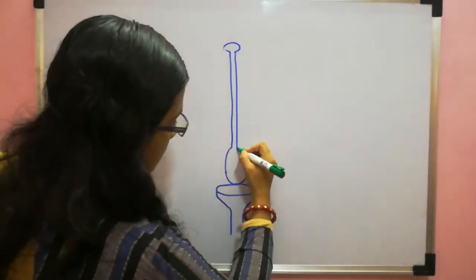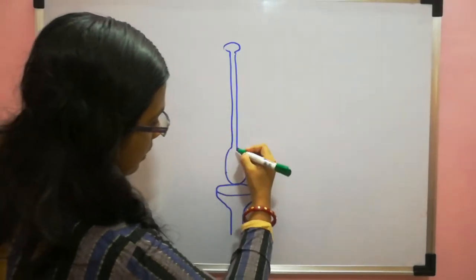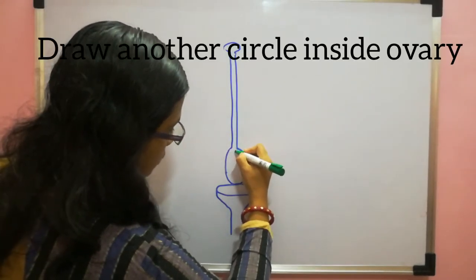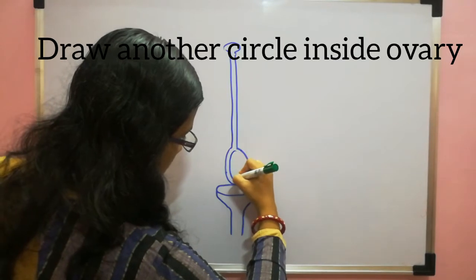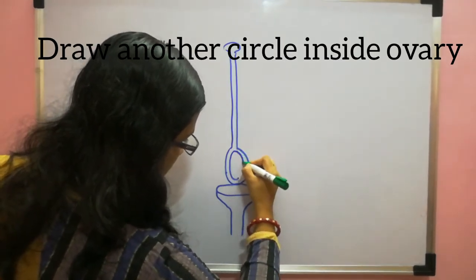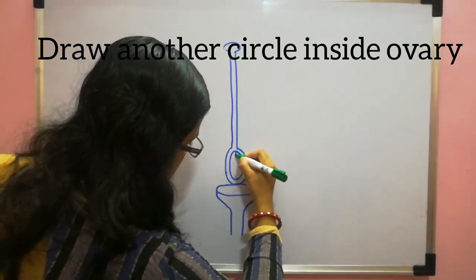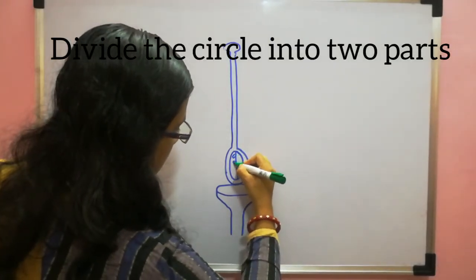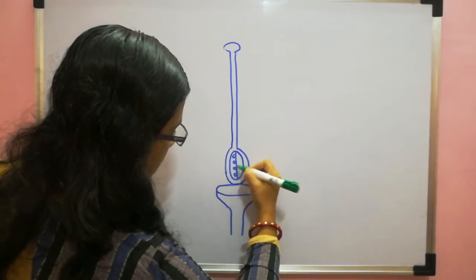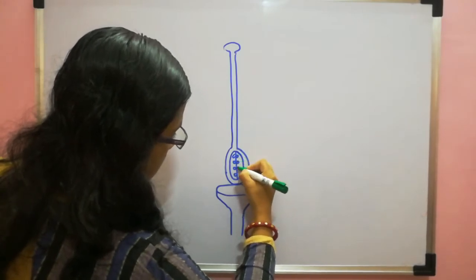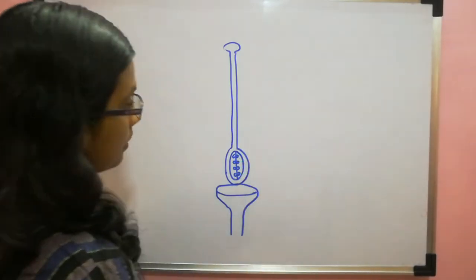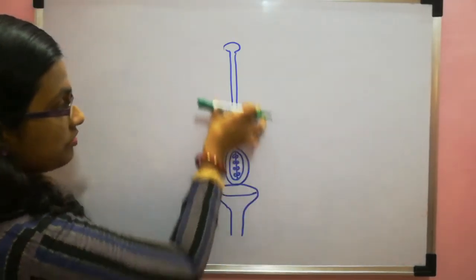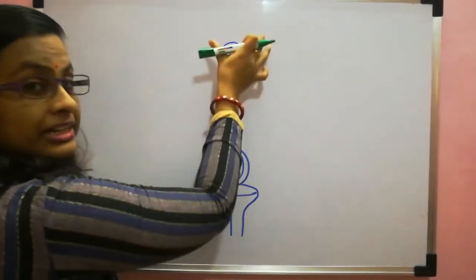So inside this circle, divide the circle into, just make another circle. And then divide the circle into two halves. Then make small circles inside it. Now this is a female part of the flower. It is ready.